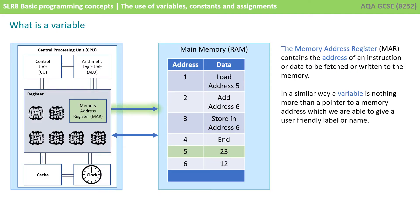So first let's consider what actually is a variable. Well, you actually studied a close analogy earlier in the course. When you were learning about the components of the central processor, you were being taught about registers, small areas of superfast memory that have a specific purpose. Although you don't need to know about the different types of registers, one of them is called the memory address register. And at any one time this contains the address of an instruction or data to be fetched or written to the memory. In a very similar way to this, a variable is nothing more than a pointer to a memory address, which we're able to give a user friendly label or name.